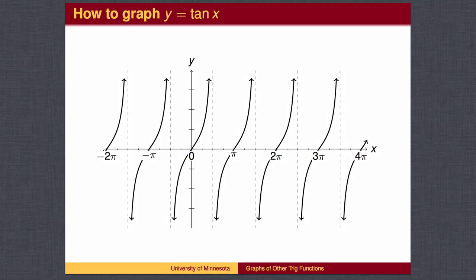Since the unit circle repeats every 2 pi, so does the graph of tangent, and we get a repeating sequence of these branches.